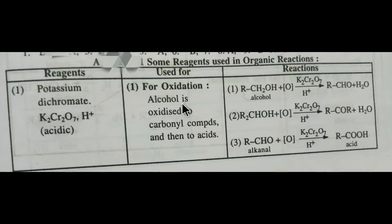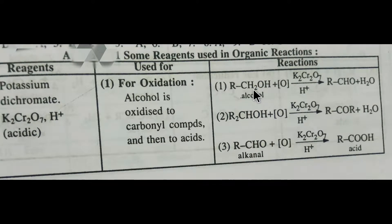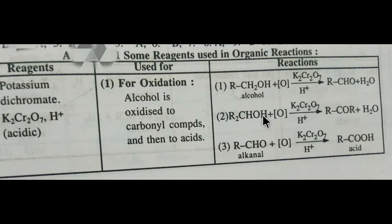When potassium dichromate is used, alcohol is oxidized to a carbonyl compound — either an aldehyde or a ketone. For example, a primary (1°) alcohol oxidized by potassium dichromate in acidic medium gives an aldehyde, and a secondary (2°) alcohol gives a ketone.